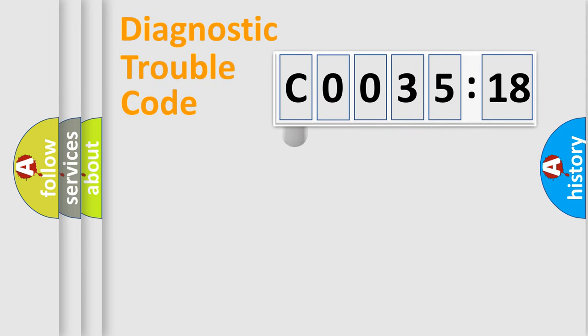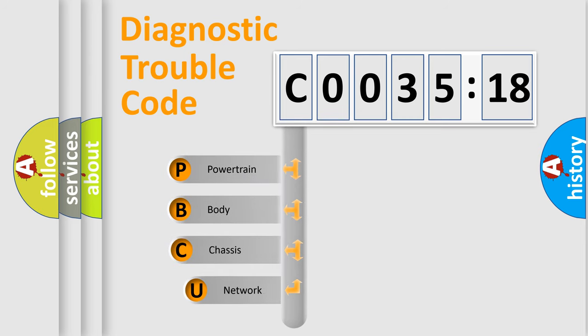First, let's look at the history of diagnostic fault code composition according to the OBD2 protocol, which is unified for all automakers since 2000. We divide the electric system of automobile into four basic units.